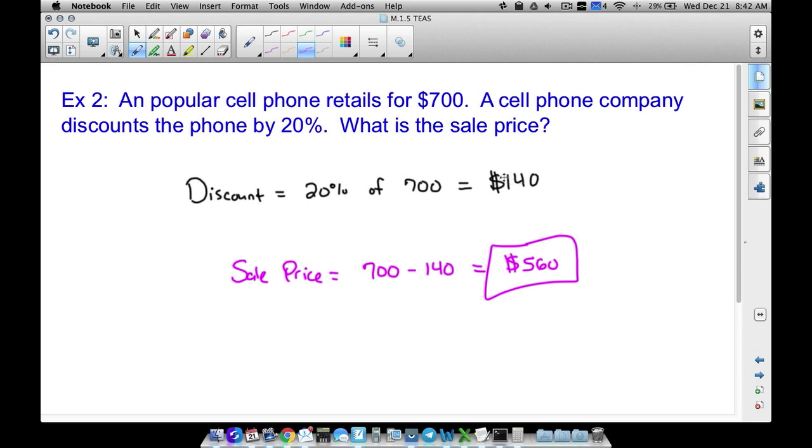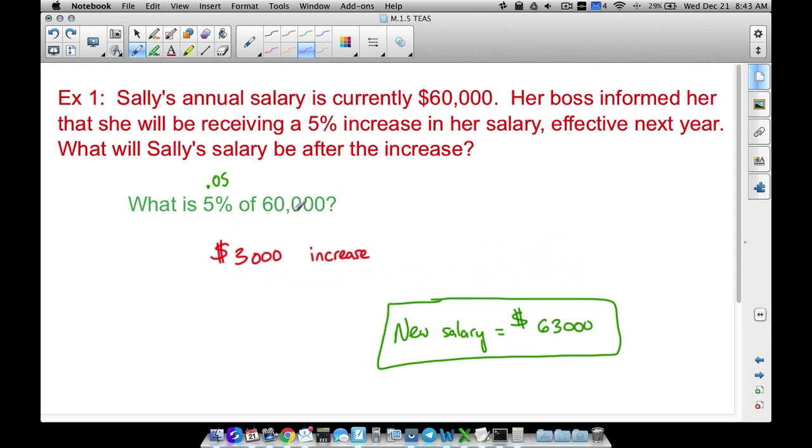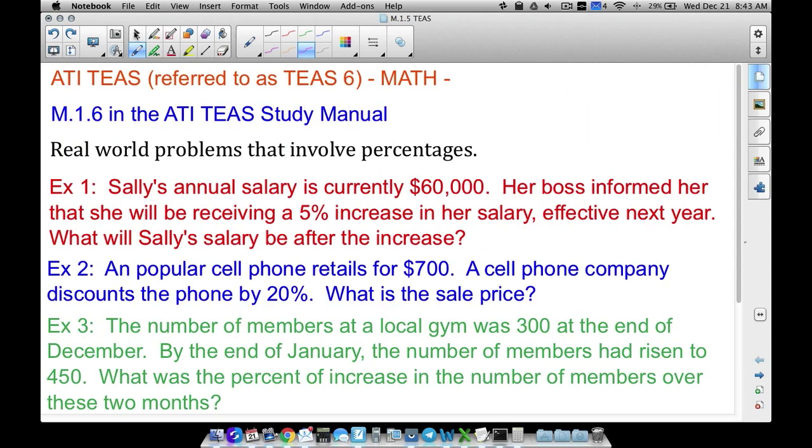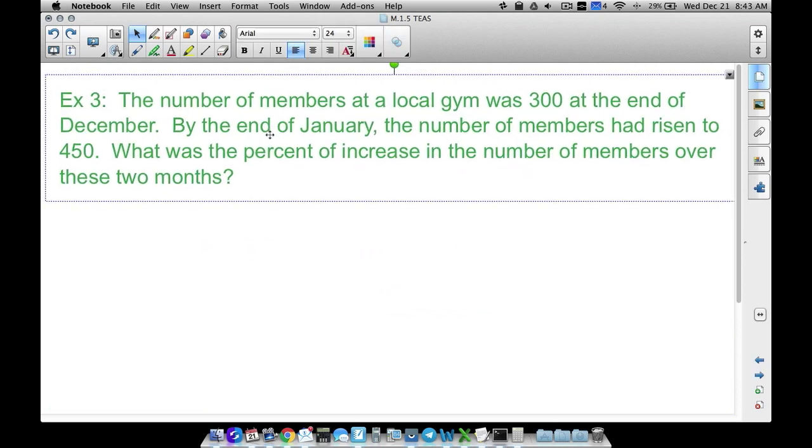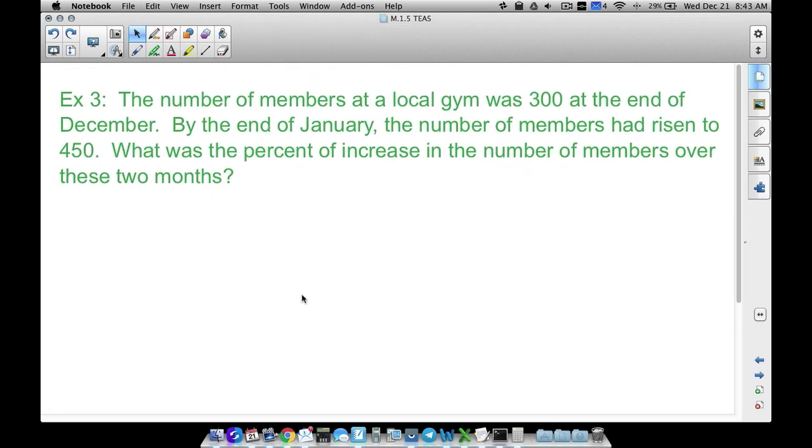Again, proportions or equations you can do those as well, but whenever you want to find a percentage of a number, multiply them together. Then just be careful, make sure you answer the question because this question could have easily been—instead of that—it could have been what is the discount. If it said what is the discount, your answer would be 140 bucks. So make sure you read that question very carefully on the TEAS test as you are completing these types of problems.